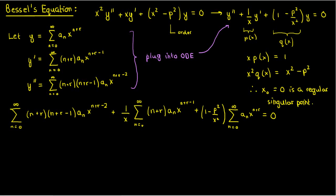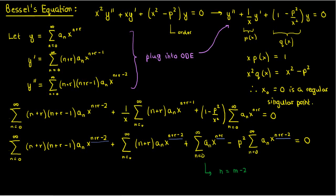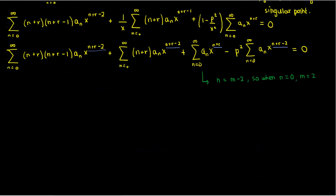We simplify by taking the 1/x inside the series and expanding the last term. The issue is that three series have x raised to the power n+r-2, but one series has x raised to n+r. To fix this, we re-index the last series by writing n = m - 2, so when n = 0, m = 2. The modified series becomes the sum from m = 2 to infinity of a_{m-2}·x^(m+r-2). Changing m back to n, we substitute this back into the ODE.